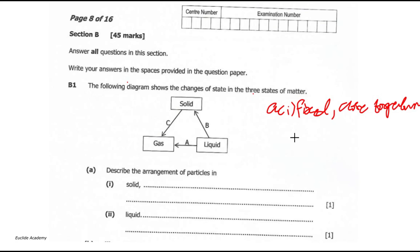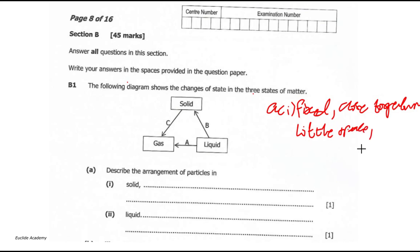They are fixed, close together, and have little space in between them. You could have used any of these three points. Moving on to A2 — describe the arrangement of particles in a liquid.